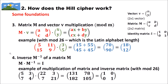The next thing we need to know is the inverse of a matrix. When you multiply the original matrix M with its inverse matrix M⁻¹, you get the identity matrix. As an example: matrix (5, 3, 7, 4) multiplied by its inverse (22, 3, 7, 21) gives (131, 78, 182, 105). When we calculate mod 26, we get 1, 0, 0, 1 — which is indeed the identity matrix.